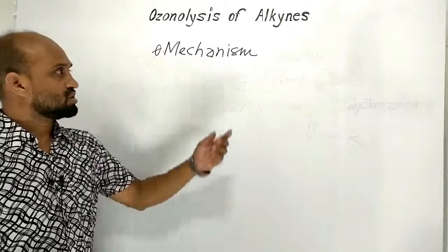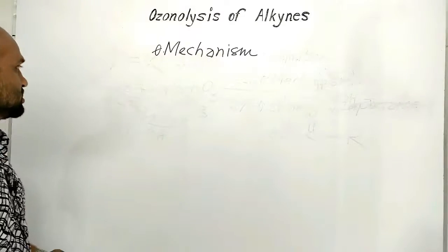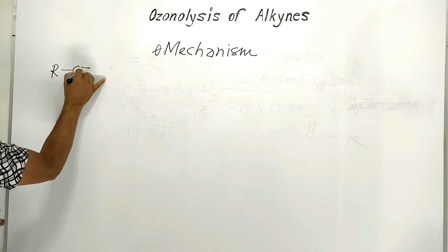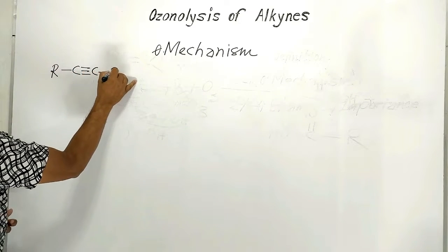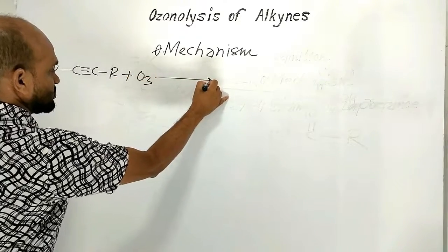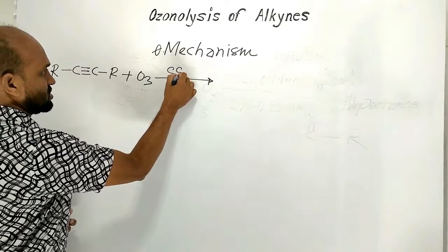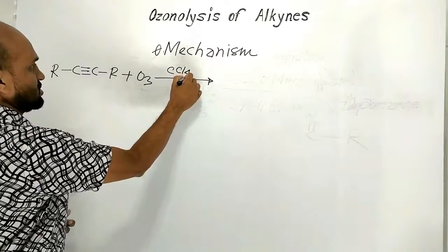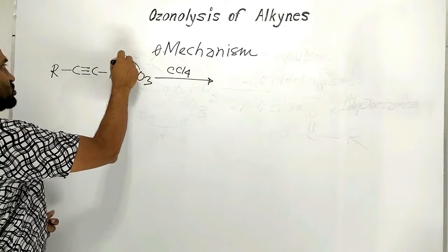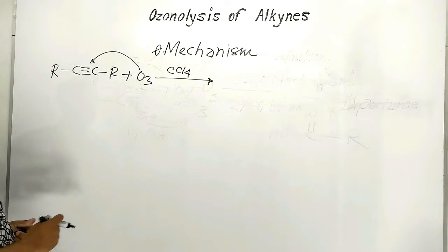Now the next point is the mechanism of ozonolysis. An alkyne is taken and ozone is added in the first step in an inert solvent. Ozone is added to the triple-bonded carbon atoms.